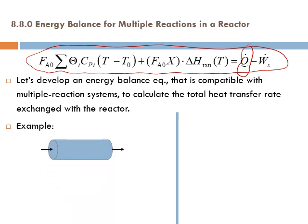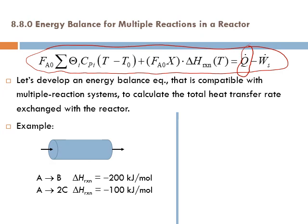Let's take an example. Let's look at this reactor where two reactions take place: A is converted to B, and also A is converted to 2C. We have the delta H of reaction for each of these reactions. The flow rate F_A0 is 10 mol per second. At the exit, F_A is 4 mol per second, F_B is 5 mol per second, and F_C is 1 mol per second.